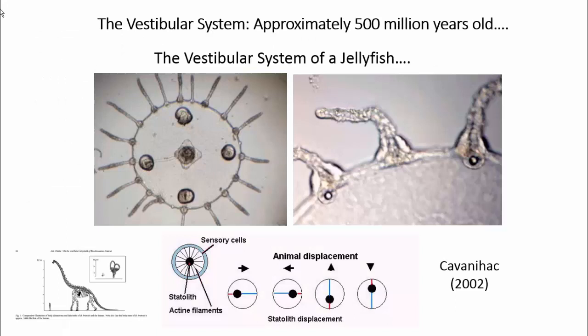The vestibular system evolved more than 500 million years ago in animals like jellyfish, where a primitive kind of statolith stimulates sensory fibers to indicate which way is up. So the vestibular system is an ancient sensory system in evolutionary terms.